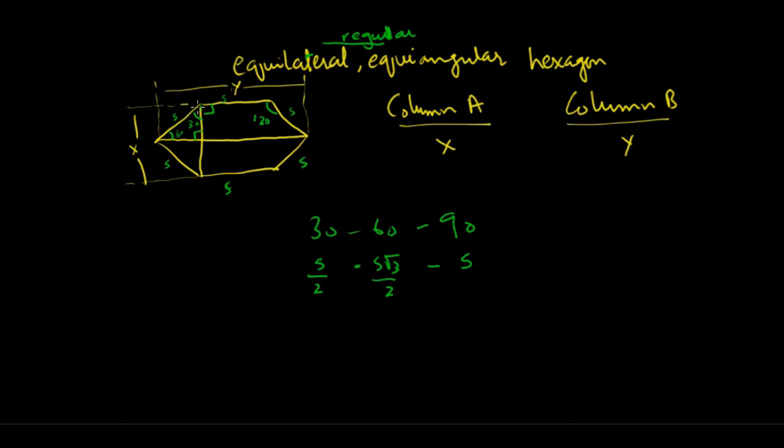The length opposite 60° is s√3/2. The triangle above is the same, so that part is also s√3/2. Therefore, x = s√3/2 + s√3/2 = s√3. When I add two halves, I get the complete thing. So x = s√3.